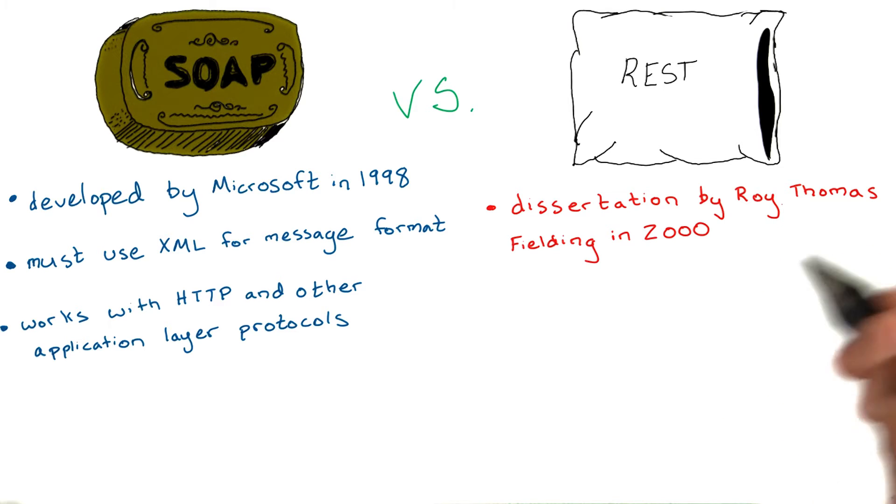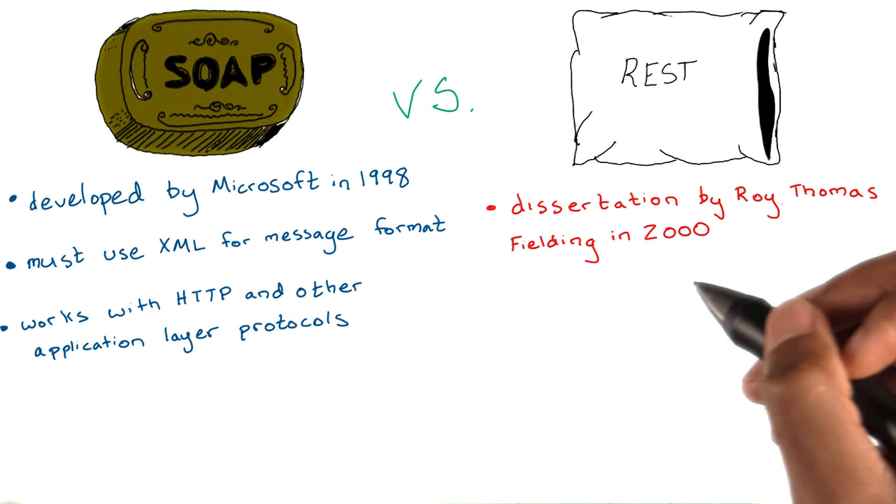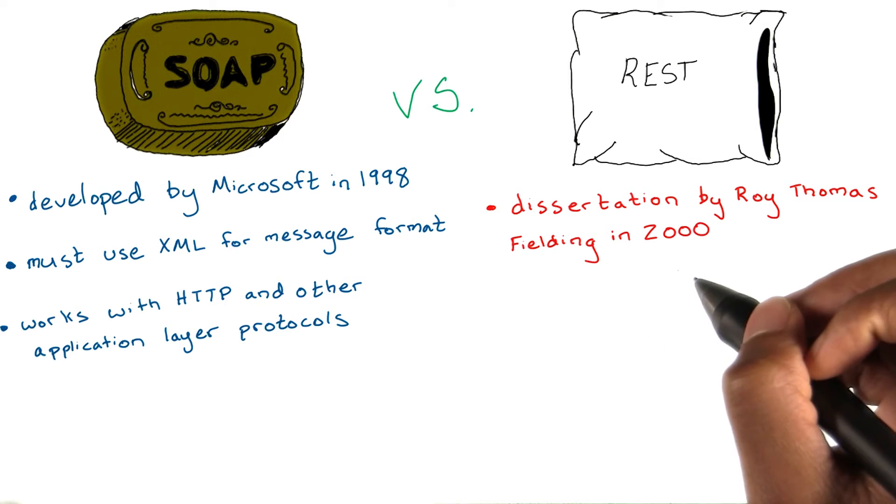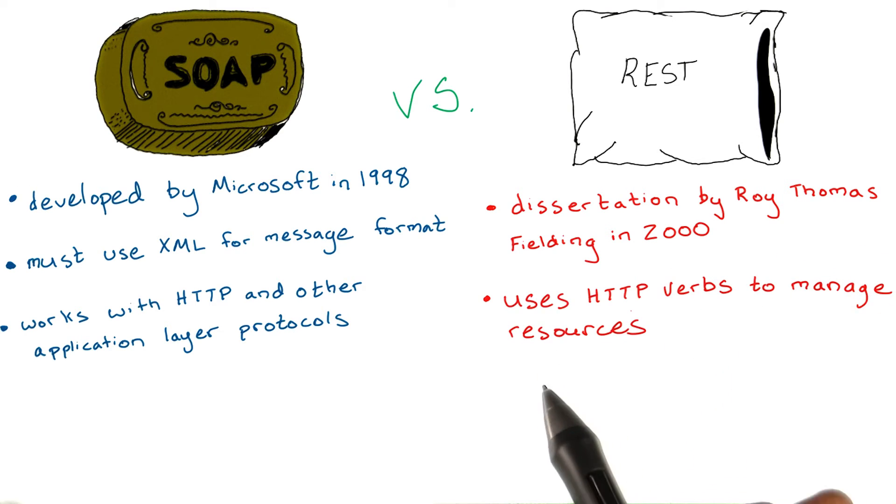REST was more of a description than a development project. The acronym first appeared in a dissertation by Roy Thomas Fielding in the year 2000. REST uses the HTTP verbs in order to access and manipulate resources, but can use any type of messaging protocol to structure the data it sends. In order for an application to be truly RESTful, it must adhere to a set of constraints Fielding defined in his dissertation.